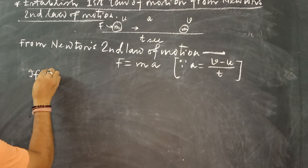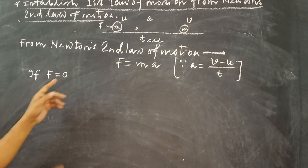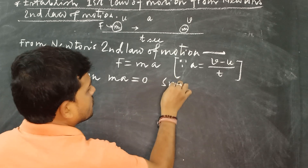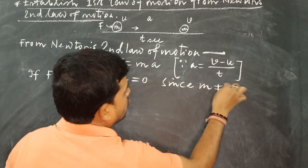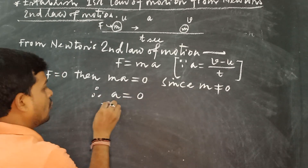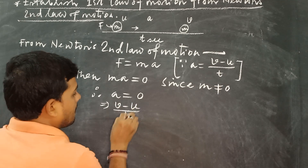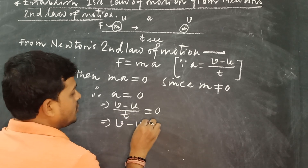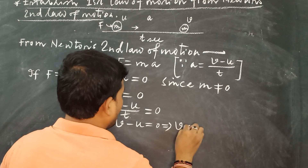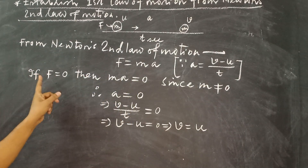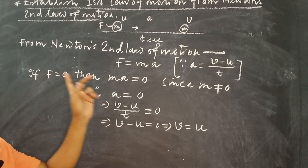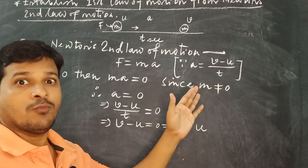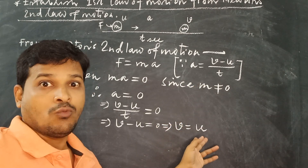If F = 0, meaning no external force is applied, then MA = 0. Since M ≠ 0, therefore A = 0. When A = 0, that means (V − U) / T = 0, so V − U = 0, which gives V = U. That means if no force is applied on the body, the initial velocity and final velocity remain the same — the body continues its motion in the same direction with the same velocity.